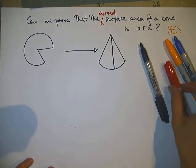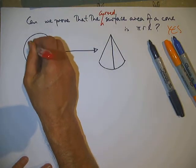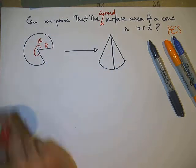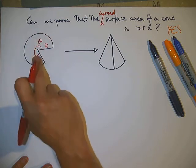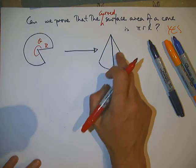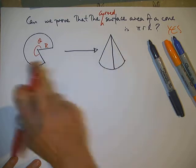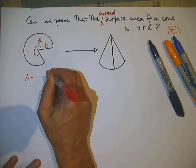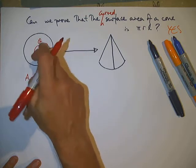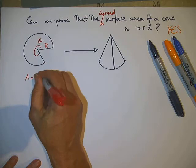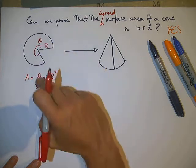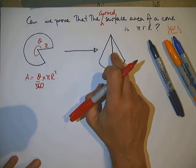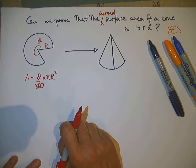That's the starting point for this. If we call the angle theta and we call that radius R, the area of this sector will be the area of the curved bit of the cone. This area is the area of the full circle multiplied by the fraction of the circle we have — that angle compared to 360 gives us that fraction.